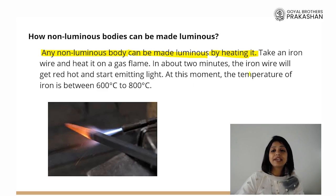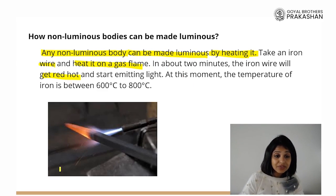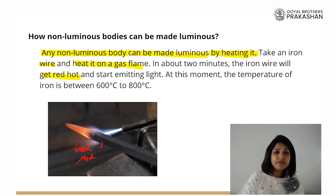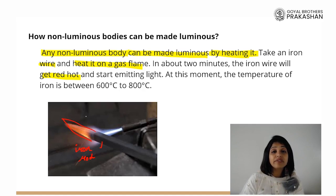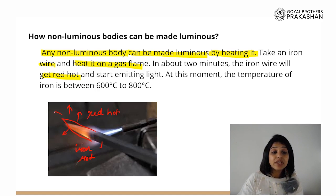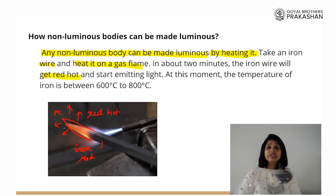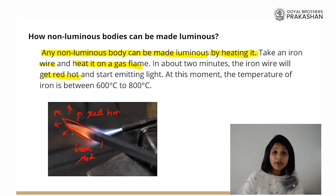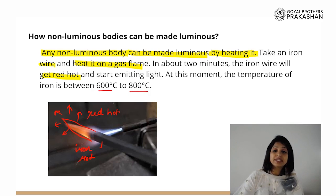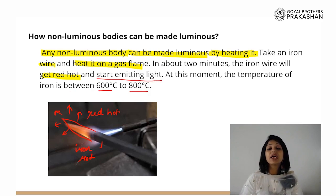Let's take a very simple example. Let's say I take an iron wire and I start heating it on a gas flame. In two minutes, the iron wire will get red hot. There is an iron rod and we are putting a flame directly on it. Once we let the flame on the iron rod, its temperature will keep on rising and it will reach a point when this iron rod will become red hot — that means very, very high temperature — and that is the time when it will start emitting light. You can just turn off the light of the room and you will see the red tip which is hot because it has reached a very great temperature. At 600 to 800 degrees Celsius, the iron rod starts emitting light. So any non-luminous body can be made luminous by heating it.